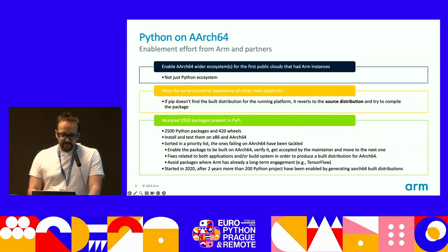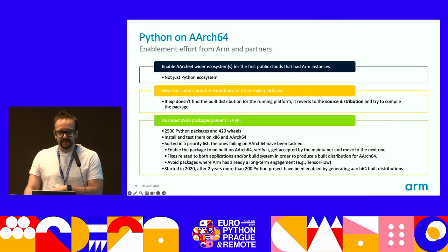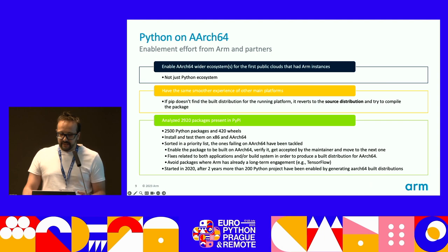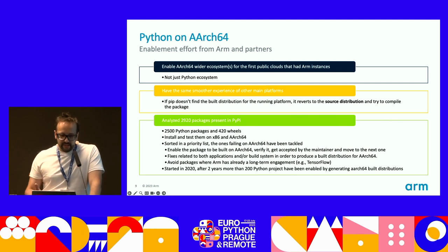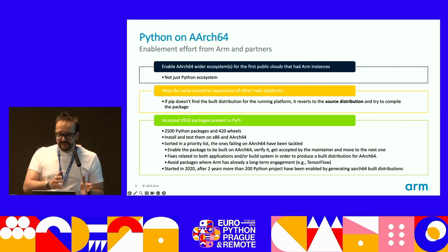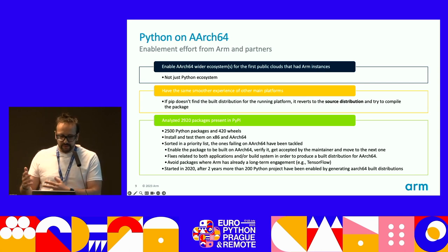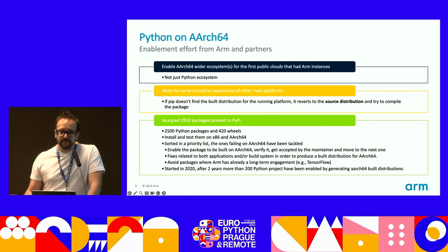Let's see what ARM and its partners have done to enable the Python ecosystem on ARM. As part of the first launch of ARM instances on the public cloud, we wanted developers to have a smoother experience with the Python ecosystem — so if a developer installs a built distribution package, it should just work without falling back to recompilation from source. This collaboration started in 2020 and lasted a couple of years. During that time, almost 2,900 packages were analyzed by testing on x86 and ARM64, issues were identified, and failing ones were fixed. After two years, more than 200 Python projects were enabled by generating ARM64 built distributions.